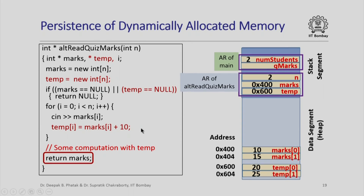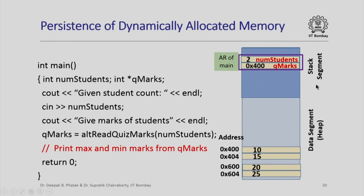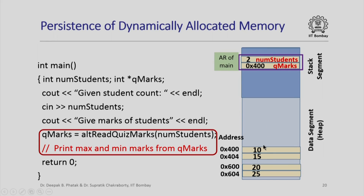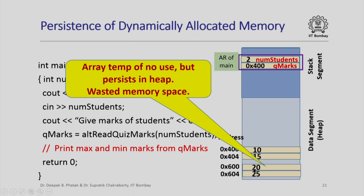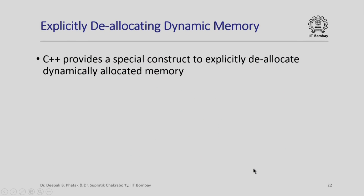When I execute return marks, the activation record for alternate read_quiz_marks will be gone, but both dynamically allocated arrays persist in the data segment. In the main function, I can only access the array pointed to by q_marks, so only the marks array is used. The temp array is of no use in main but persists in the heap — this is why we have wasted memory space. This is why we need to explicitly deallocate dynamically allocated memory, and C++ provides a special construct to do this.